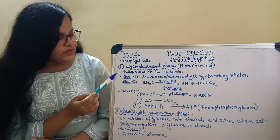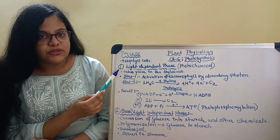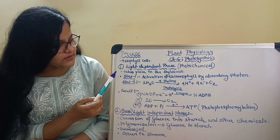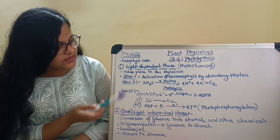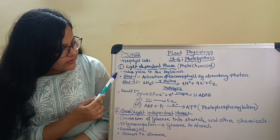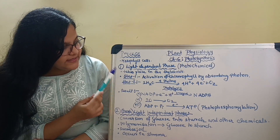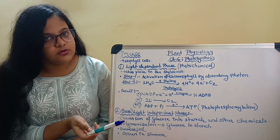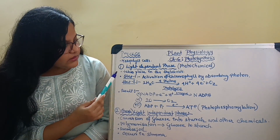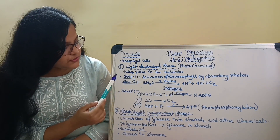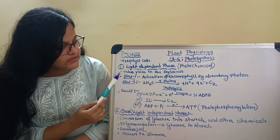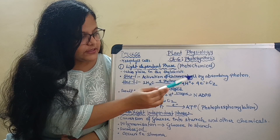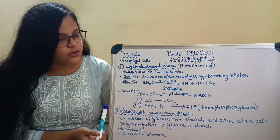Now let us first discuss about the light-dependent phase. What happens in the light-dependent phase is that it takes place in the thylakoids of the chloroplast. This light phase is divided into two steps. In step one there is the activation of chlorophyll by absorbing a photon.